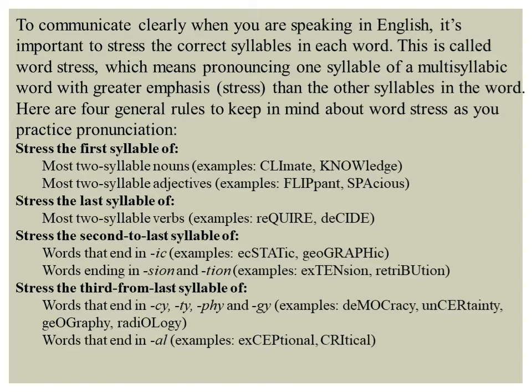Here are four general rules to keep in mind about word stress as you practice pronunciation. First, stress the first syllable of most two-syllable nouns — the stress is always on the first syllable. For example, 'climate' — you don't pronounce it as 'cli-MATE', you pronounce it as 'CLI-mate'. The stress is on 'cli'. Another example is 'knowledge'. Most two-syllable adjectives also follow this rule — the stress is on the first syllable.